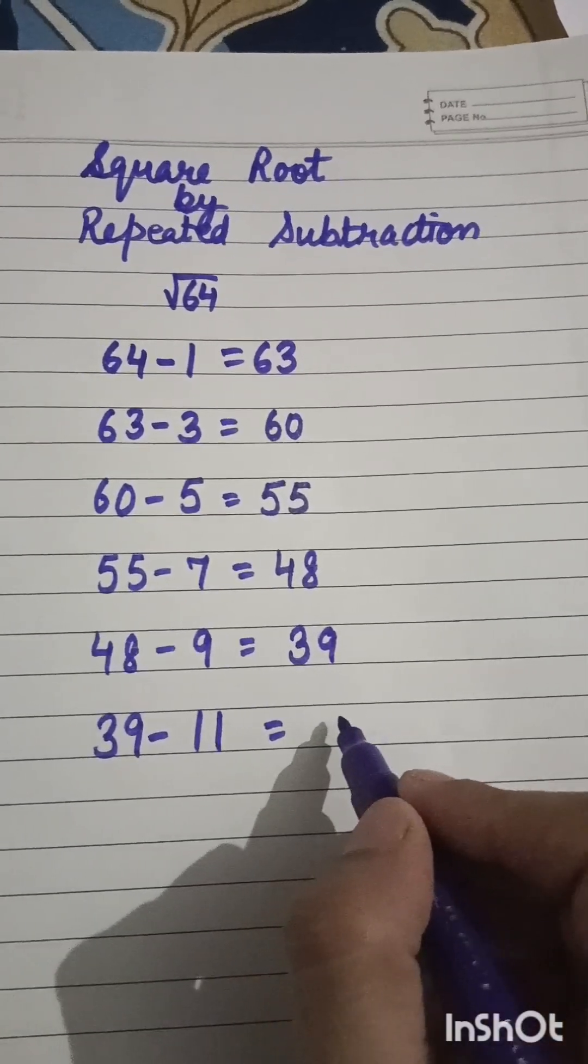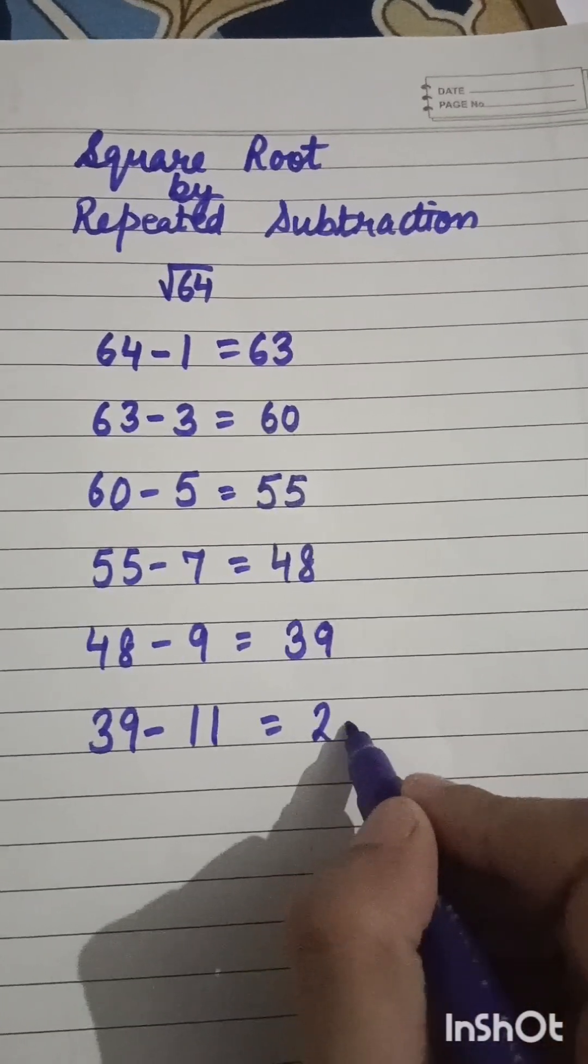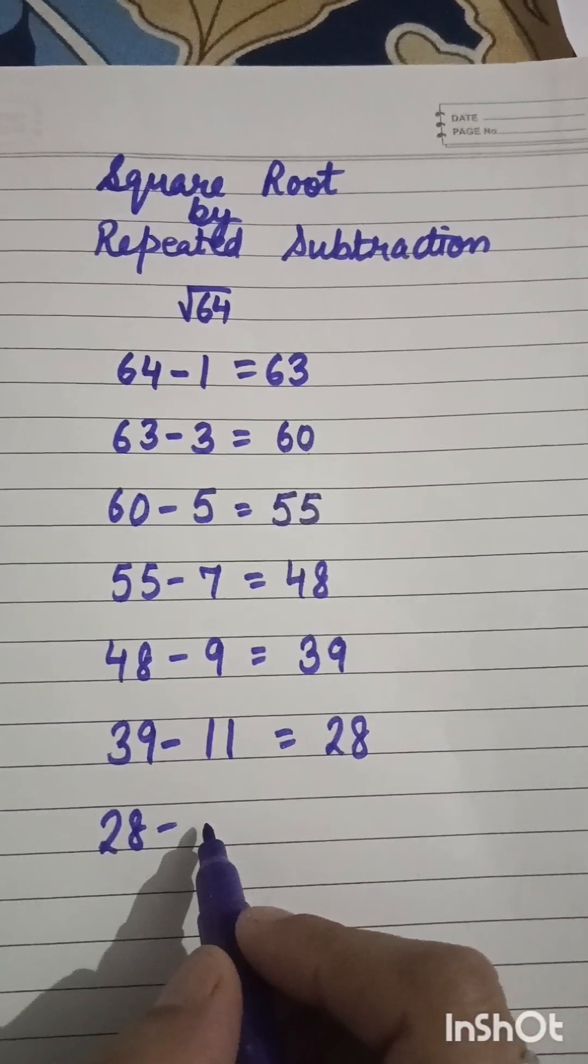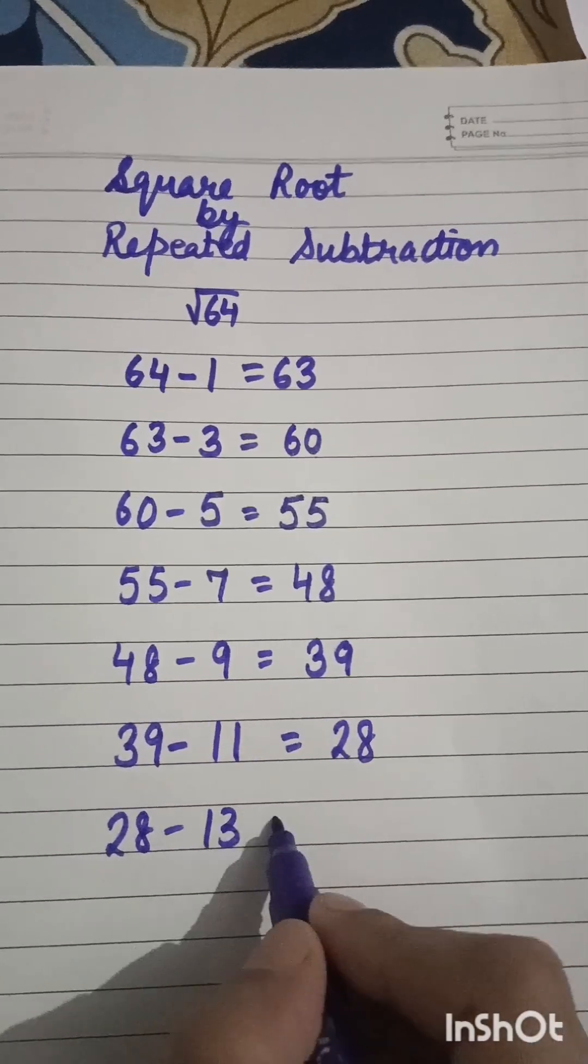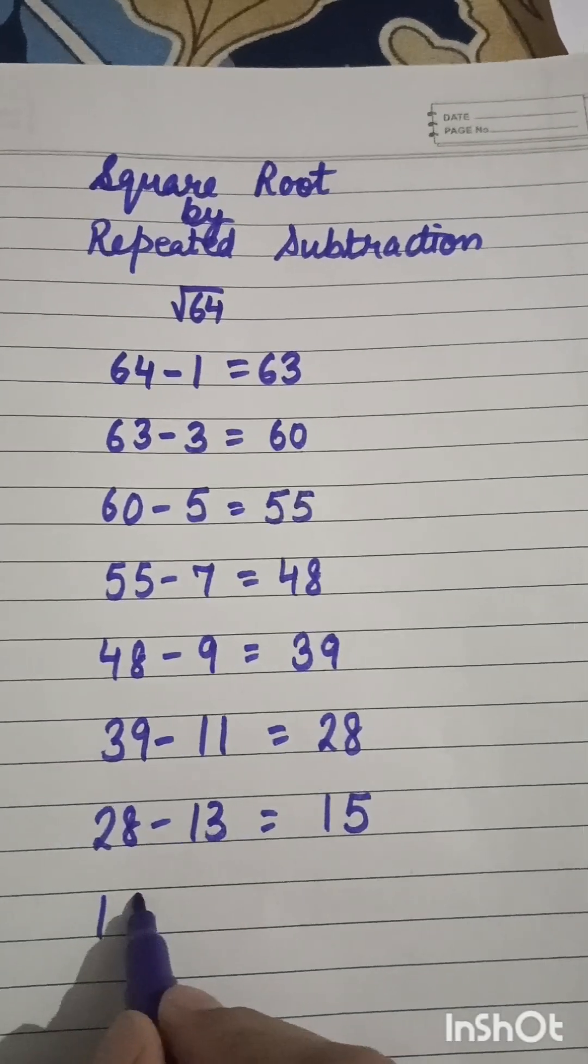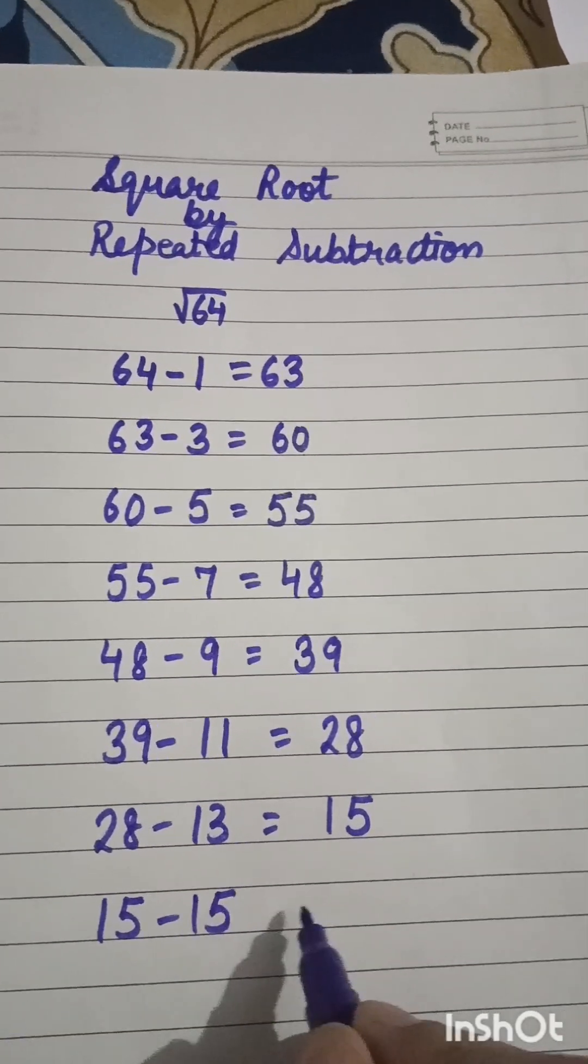Answer will be 28. Next is 28 minus the next odd number, very good, 13. Answer is 15. Next odd number, 15 minus 15 is 0.